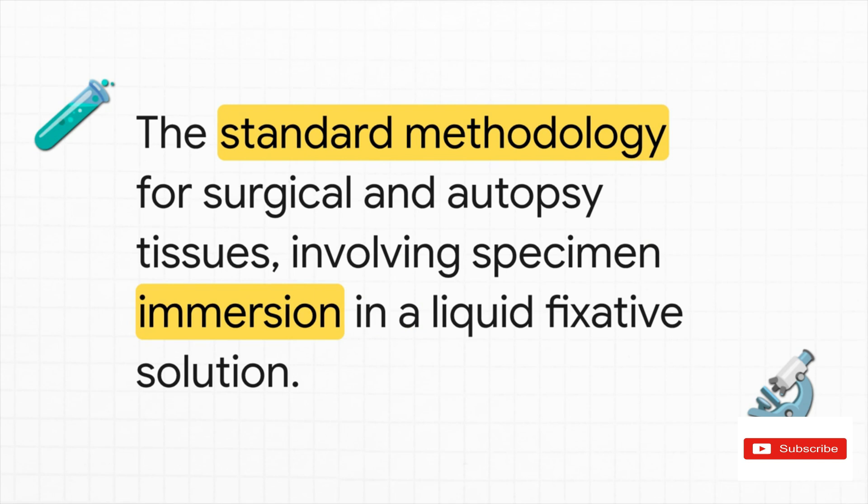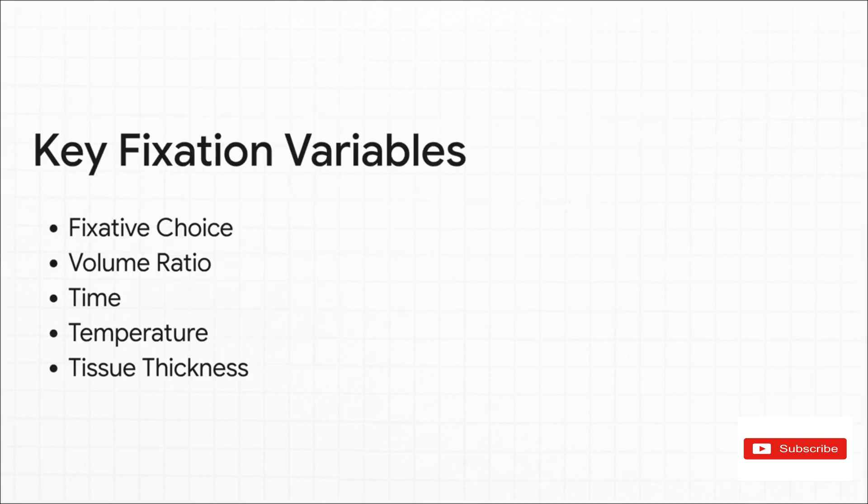So while those physical methods definitely have their specific uses, the gold standard for pretty much all surgical and autopsy tissues is chemical fixation. This is the process we all know, simply immersing a tissue specimen into a container filled with a liquid fixative. It's the workhorse of every single histopathology lab in the world. But just because it's simple, doesn't mean it's easy.